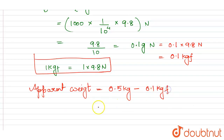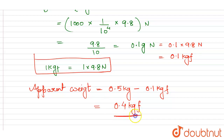So the apparent weight equals Mg minus buoyancy force, that is 0.5 minus 0.1, which equals 0.4 kgf. So this is our answer. Hope this answered your question. Thank you.